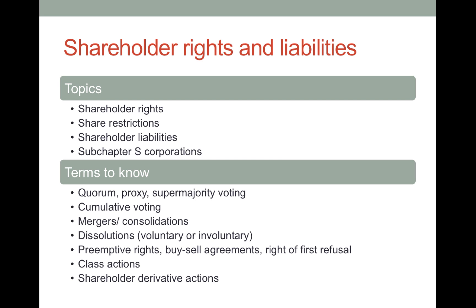A quorum is what percentage of the total stocks outstanding must be represented to have any effect as a shareholder vote. Note that it's the total number of shares, not the total number of shareholders. So let's say that you have a corporation with 100 outstanding shares of stock and your quorum is 50% of that stock, which must be represented to have any voting effect at a shareholders meeting.